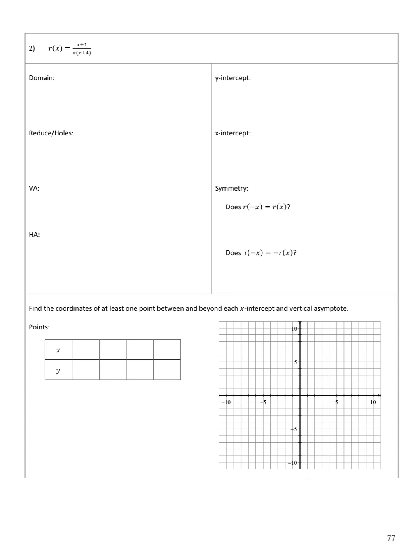Problem 2: R of x equals x plus 1 over x times x plus 4. The domain is all real numbers except any that would make the denominator 0, so x cannot equal 0 or negative 4. Written in set builder notation: the set of all x's such that x does not equal 0 or negative 4. Nothing reduces — there are no common factors in the numerator and denominator, so there are no holes.